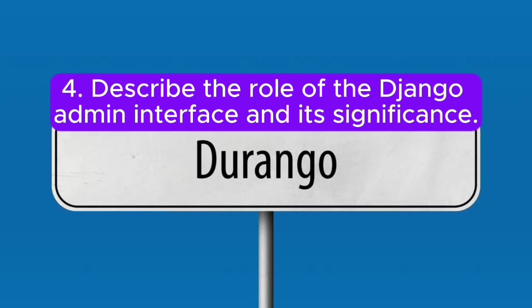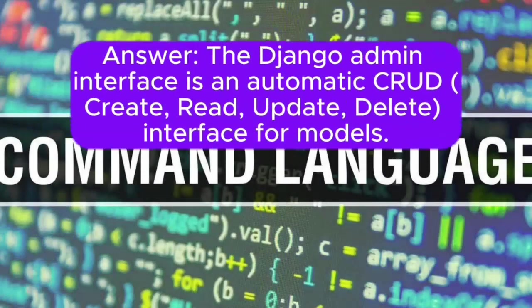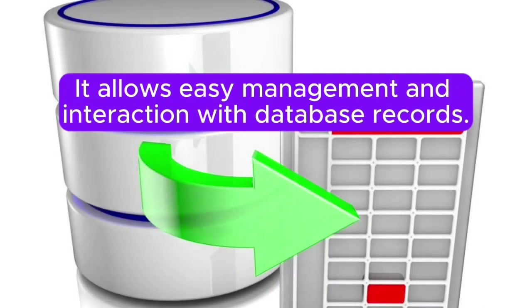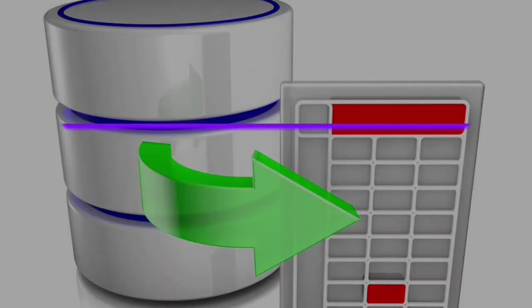Question 4: Describe the role of the Django admin interface and its significance. Answer: The Django admin interface is an automatic CRUD (create, read, update, delete) interface for models. It allows easy management and interaction with database records.